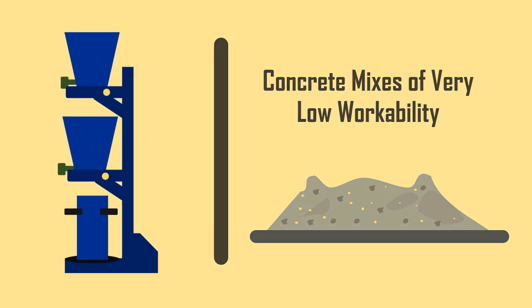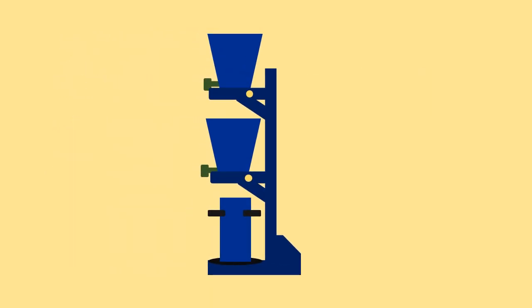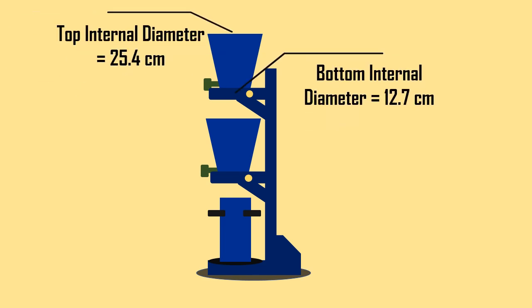The compaction factor apparatus consists of the upper hopper of dimensions: top internal diameter 25.4 cm, bottom internal diameter 12.7 cm and internal height 27.9 cm.